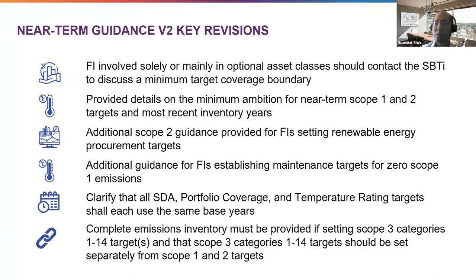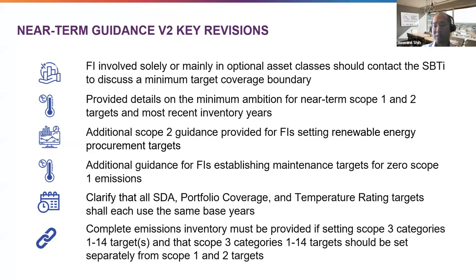Further clarifications align with corporate criteria, covering topics including minimum target boundary coverage, calculating minimum target ambition, scope 2 accounting, zero scope emissions, base years, and emissions inventory. A full summary of all updates can be found in Appendix G of the near-term guidance. We invite you to read through this after the webinar and provide feedback in the consultation survey.